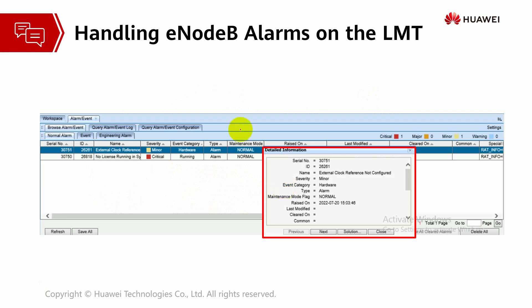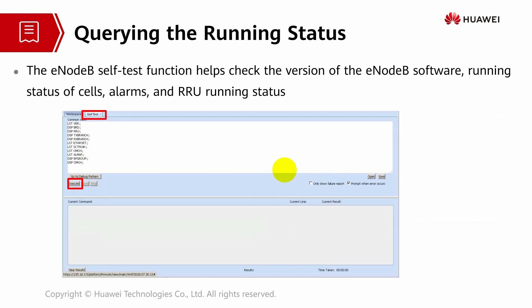Handling eNodeB alarms on the LMT. Basically, there is a parameter for browsing the alarm. You can view the alarm type and sort out how to handle it. Troubleshooting also takes place here, and analysis of the alarm can also be handled using the LMT. Service-related alarms and environmental-related alarms are included. Acquiring the running status — a self-test function — allows you to check the current eNodeB software version, running status of the cell, alarms, and RRU running status. This is similar to a health check, and we can rectify problems immediately.